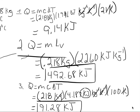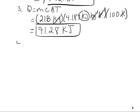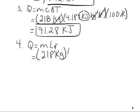We have three of our five parts done — two to go. The fourth part: we're changing from a liquid to a solid, so q = m times the latent heat of fusion. Same mass: 0.218 kilograms. The latent heat of fusion for water is 334 kilojoules per kilogram. Notice the difference between the latent heat of fusion and vaporization — it takes far more energy to go from liquid to gas than from solid to liquid because of what we're doing to those intermolecular forces. Calculating this out, we get 72.81 kilojoules.